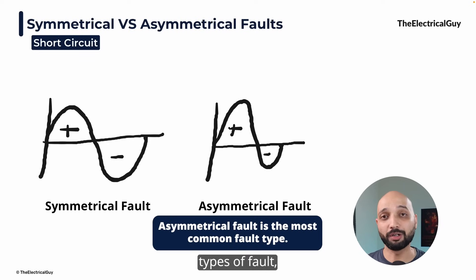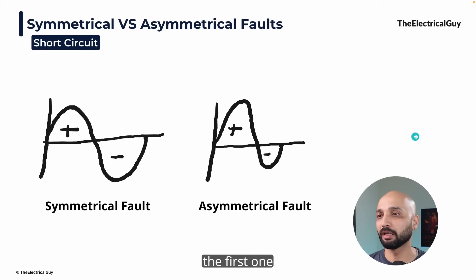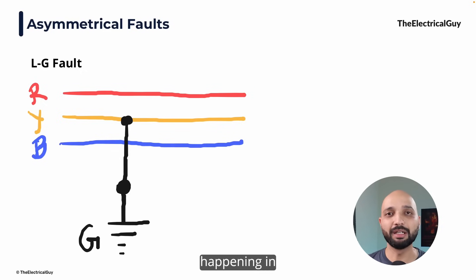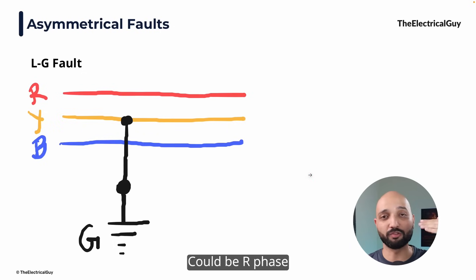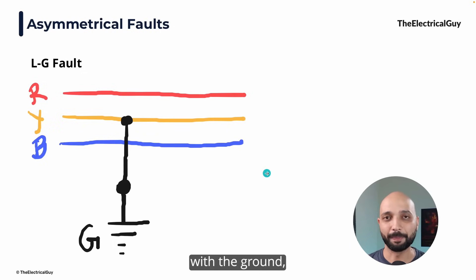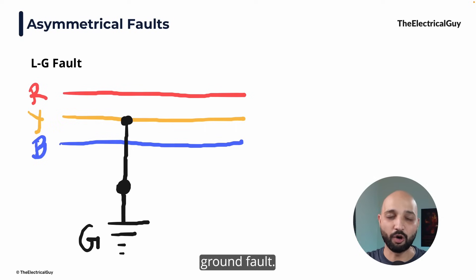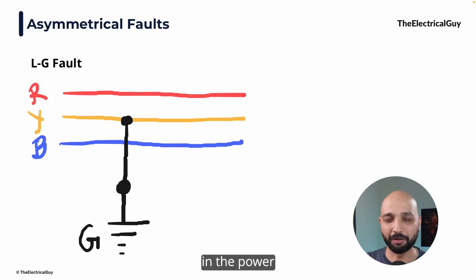Looking at the different types of asymmetrical fault, the first and most common type is the line to ground fault. What is happening in this fault is one of the phases — it could be R phase, Y phase or B phase — is getting connected with the ground, creating a short circuit. That is what we call an LG fault or line to ground fault. It is the most common type of fault in the power system and occurs very, very frequently.